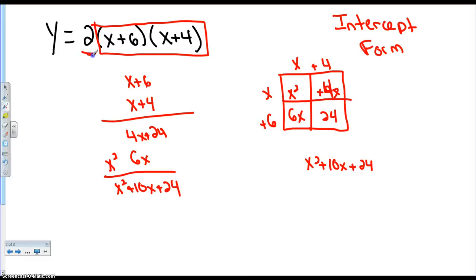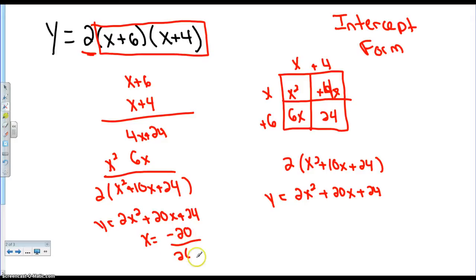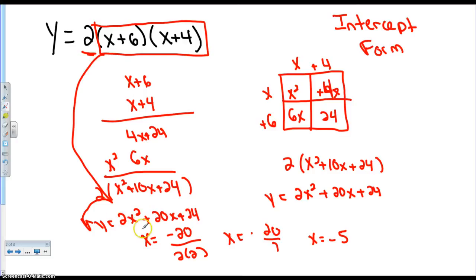Now because I multiplied both of these things, I've got to deal with the 2. So I'm going to distribute the 2, and I get 2x squared plus 20x plus 24. These are y equals expressions. So if I want to graph, I can find the intercepts, or I can say x equals negative 20 over 2 times 2 — that's negative 20 over 4 — so x equals negative 5. That's an easy way to turn this into something I know how to work with. I can rewrite it in standard form and graph it.